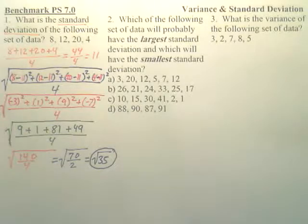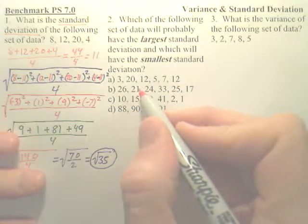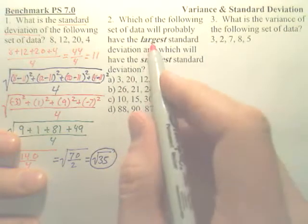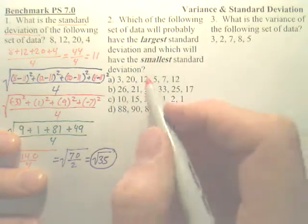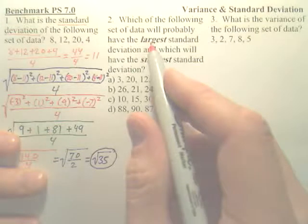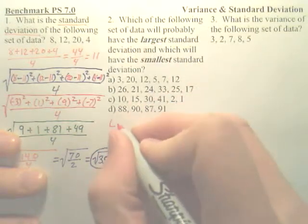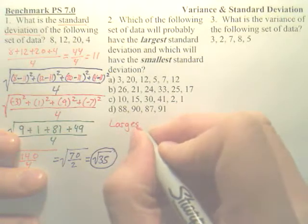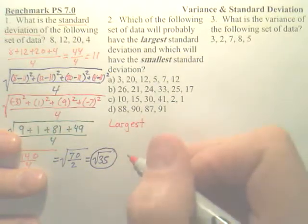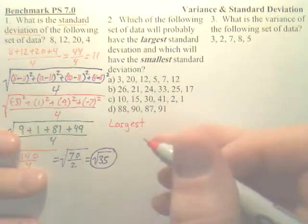Now, number 2. Number 2, I want to find which has the largest standard deviation and which has the smallest. Now, the largest standard deviation would be the data that's most spread out. So, the largest would be which set of data has the largest spread, like it's all kind of all over the place.